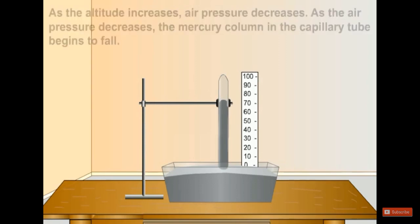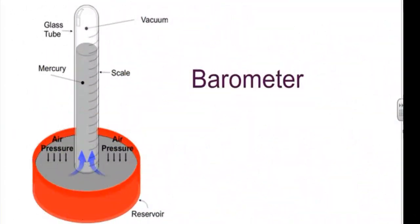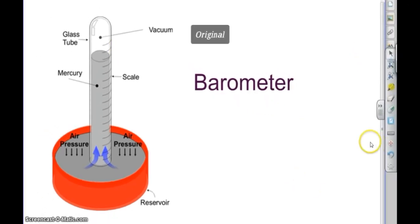After closing it with thumb, we will invert it and place it carefully over the bowl. Then the thumb is removed from the open end very carefully under the level of mercury in the bowl. We will observe that some mercury moves down, thereby creating an empty space which is commonly called Torricellian vacuum. Vacuum means there is absence of air.